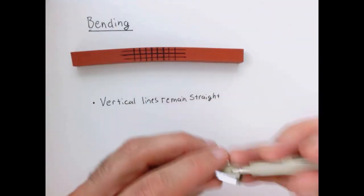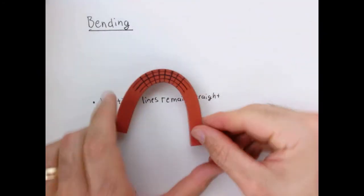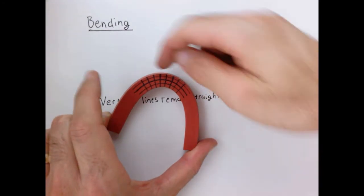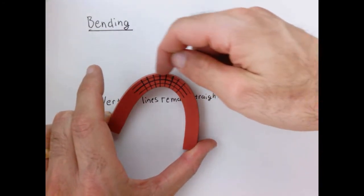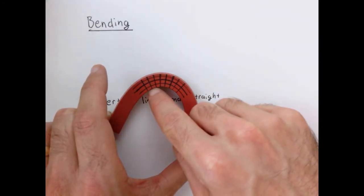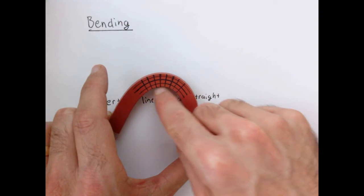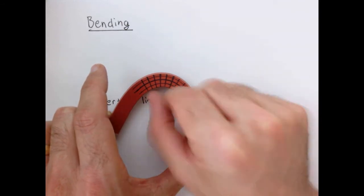So what does that mean? That means the material along the upper surface of the bar has to be in tension because it's elongating, and the material on the lower surface of the bar has to be in compression because it's getting squished.